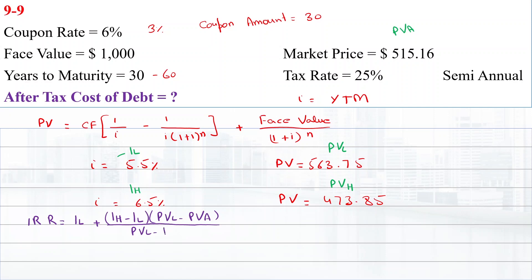That equals 0.055 plus [(0.065 minus 0.055) times (563.75 minus 515.16)] divided by (563.75 minus 473.85).